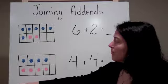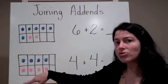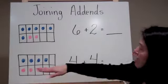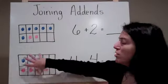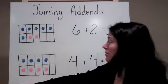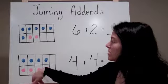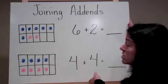Here's my next problem. I have four blue counters. I have four red counters. How many total counters do I have? So I have the equation of four plus four equals what? So I know that I'm joining these two addends. So I'm going to count up from four, five, six, seven, eight. So I know that four plus four equals eight.